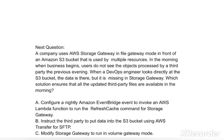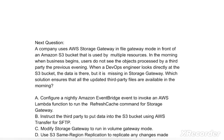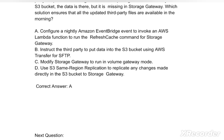Options are: Option A: Configure a nightly Amazon EventBridge event to invoke an AWS Lambda function to run the refresh cache command for Storage Gateway. Option B: Instruct the third party to put data into the S3 bucket using AWS Transfer for SFTP. Option C: Modify Storage Gateway to run in volume gateway mode. Option D: Use S3 same-region replication to replicate any changes made directly in the S3 bucket to Storage Gateway. The correct answer is option A.